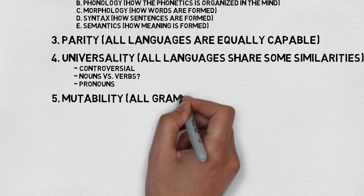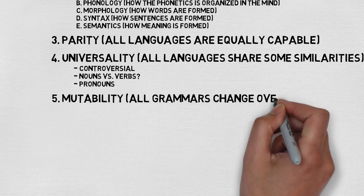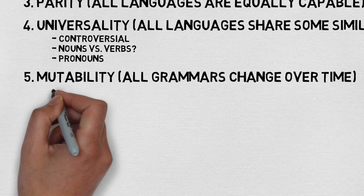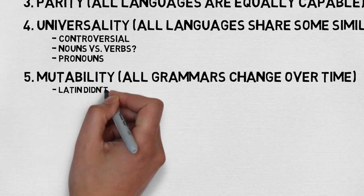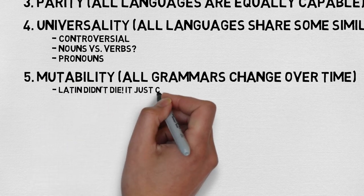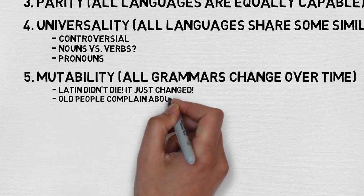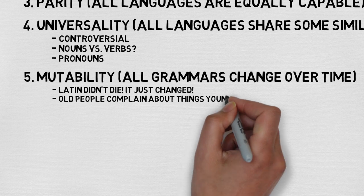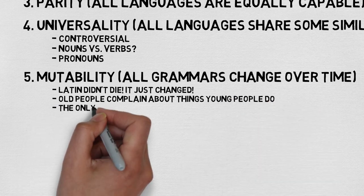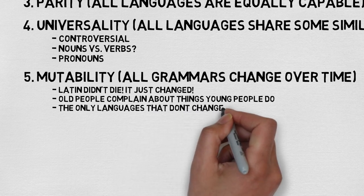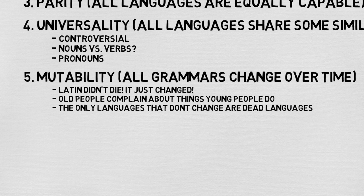Number five is the mutability of language. All grammars change over time. This is why Latin eventually split into the Romance languages. It's why Old English is mutually unintelligible to people who are only speaking modern English like I am right now. And it's why you might see differences in the way that you or your grandparents spoke. Few people use terms like Chesterfield or Davenport nowadays, and maybe some people are using Serviette, but even that's relatively rare.